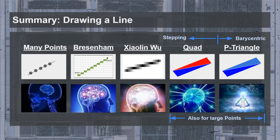To summarize, the different line drawing methods are shown, ranked in order of efficiency. Note that the quad and parallelogram triangle method can also work for drawing arbitrarily sized points, but the p-triangle method requires barycentric coordinates, while the others all work with the older stepping-based parameter interpolation. I plan to go into more detail about the difference between the rasterization and interpolation methods in another video, so it's not a topic that will be discussed further here.